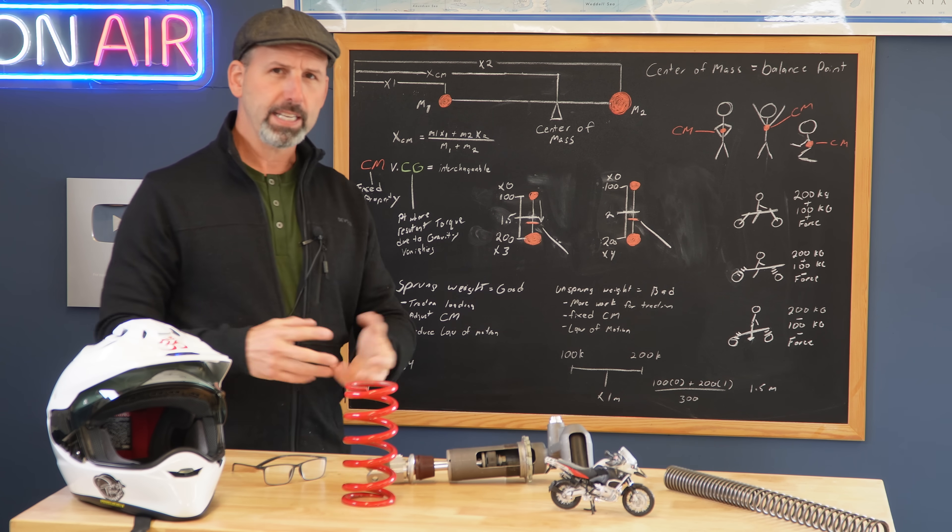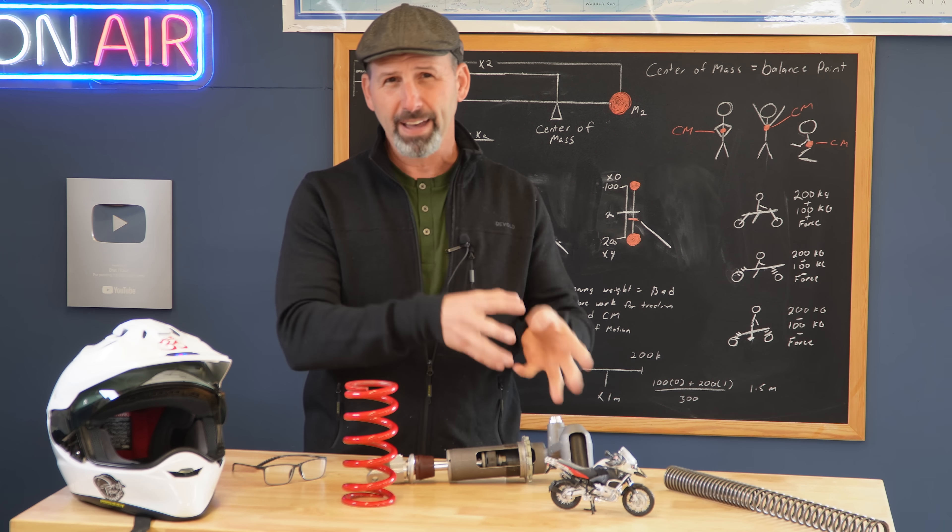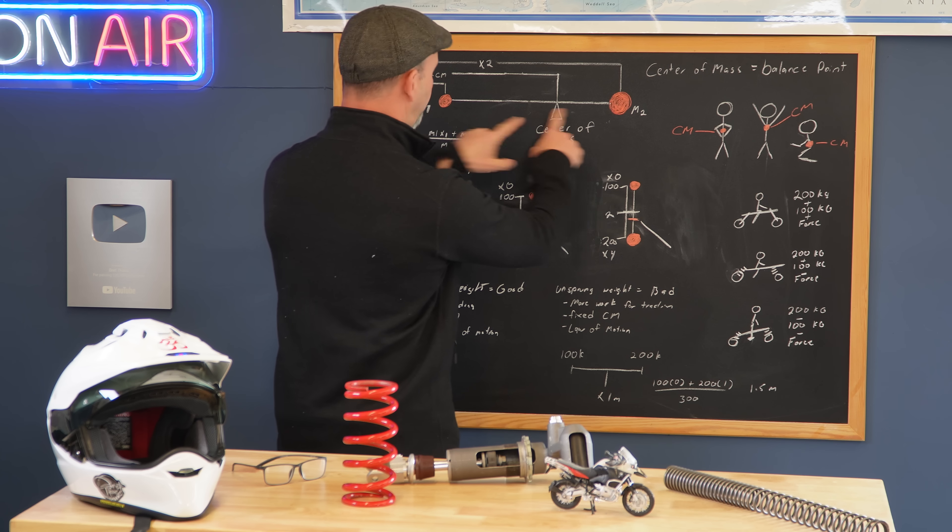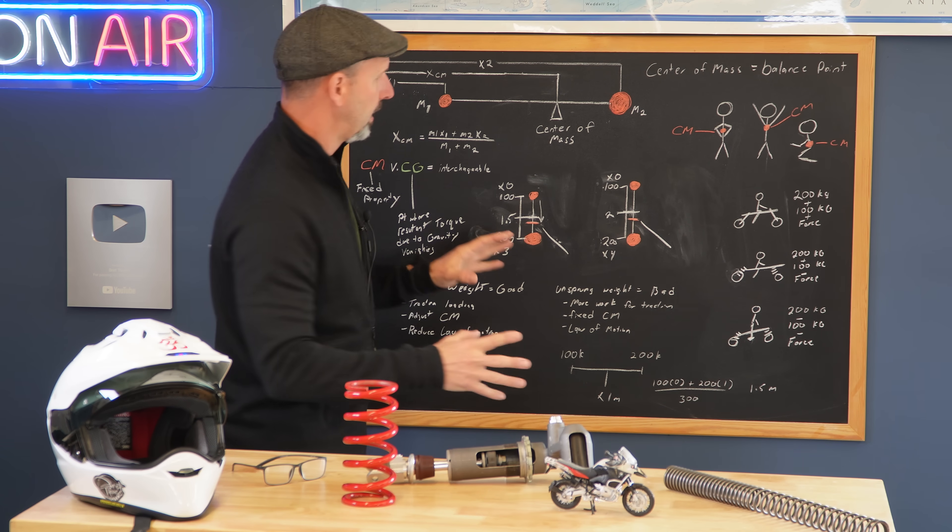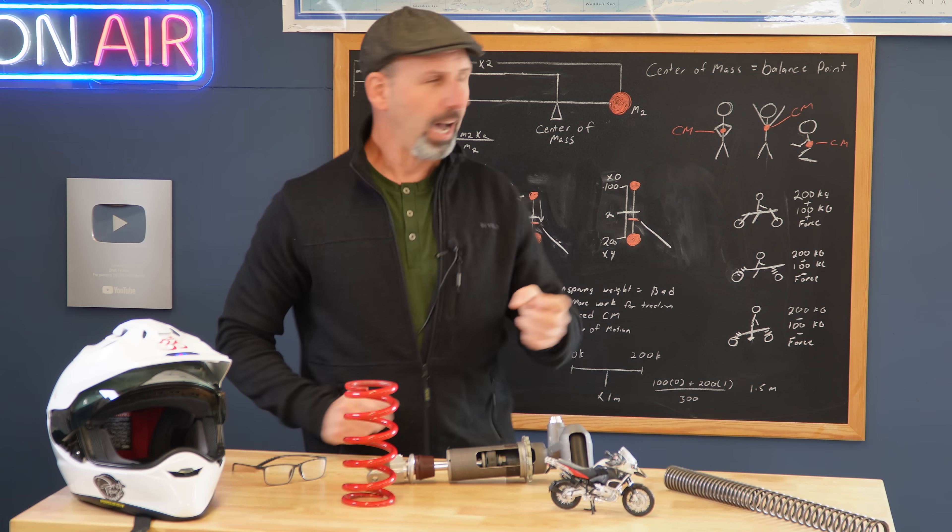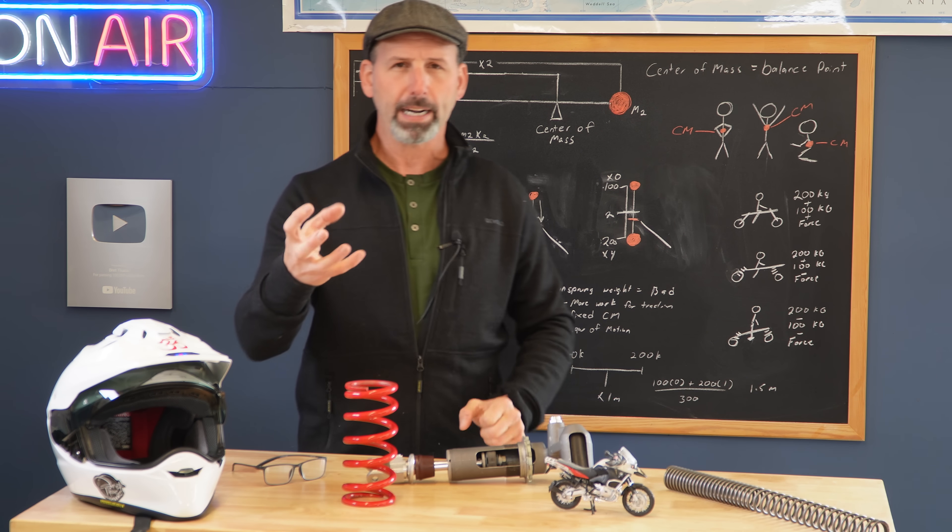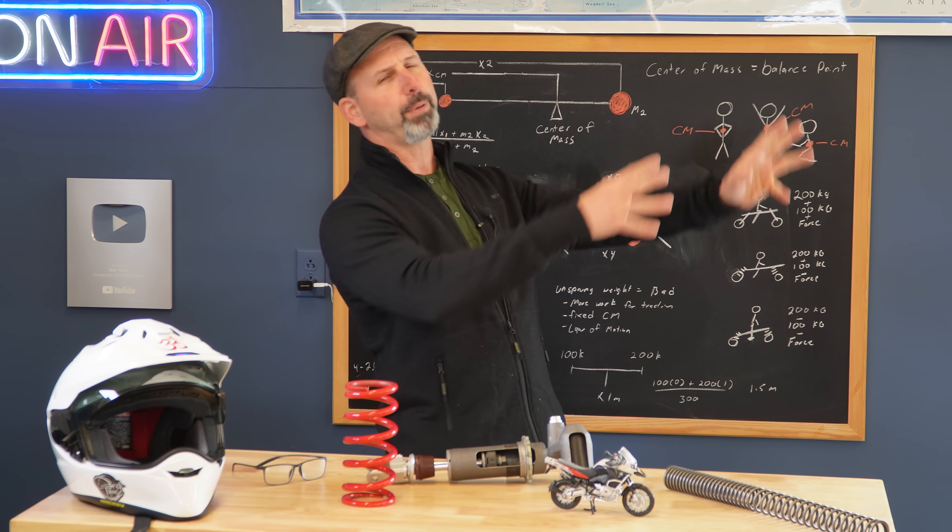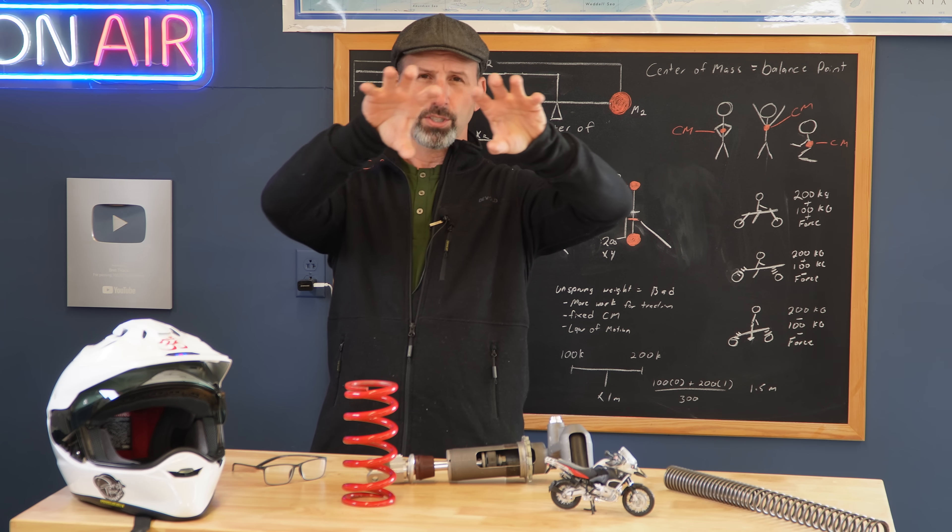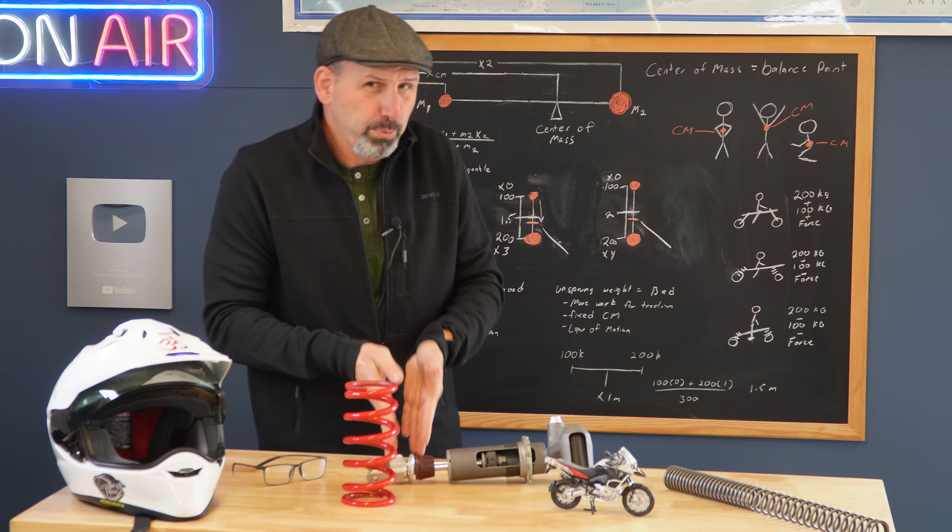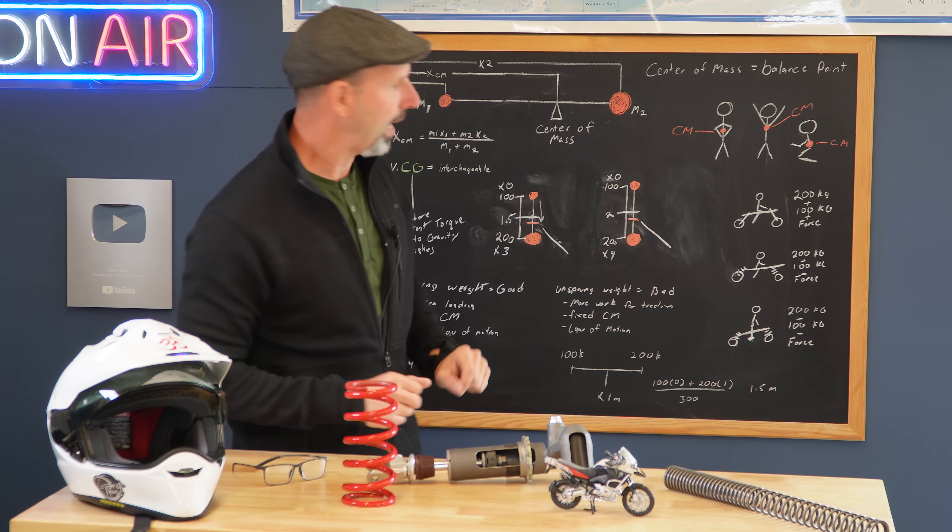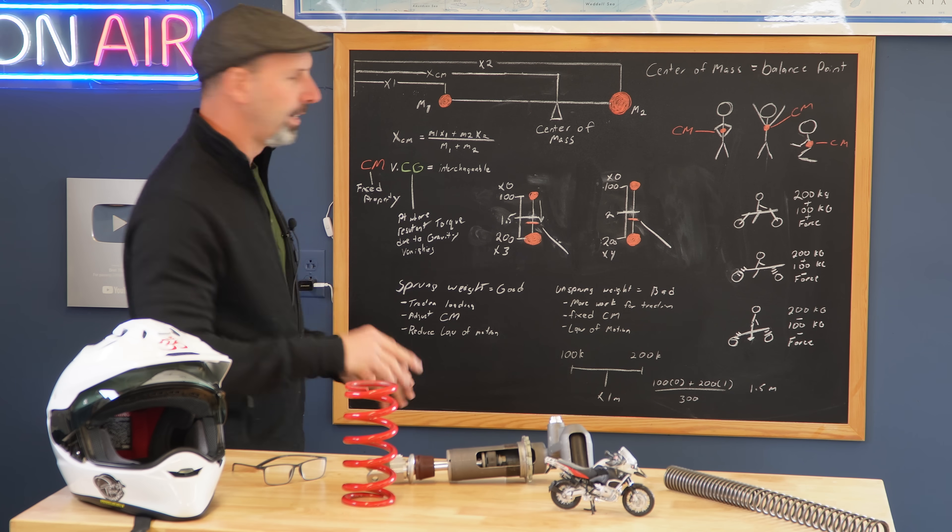I'm using center of mass and center of gravity interchangeably, even though these are two different definitions. Center of mass refers to the center point of those two masses. Center of gravity, although the same here on Earth, is actually an effect of the center of mass and the gravitational body pulling against it. The farther away we get from Earth, there's a divergence of center of gravity and center of mass. But here on the planet, since we're on motorcycles, these are the same location and are commonly interchanged, and that's okay.